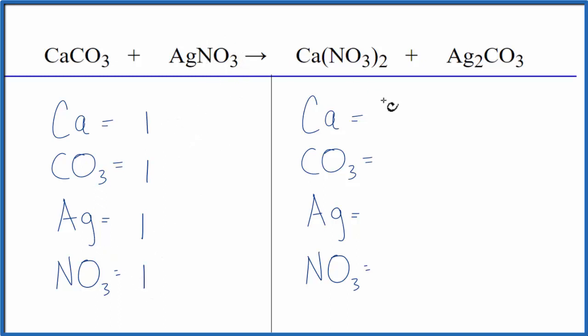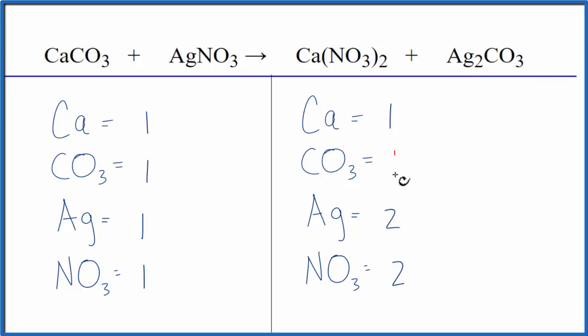On the product side, we have one Ca, and then NO3, the nitrates — we have two of those, so let's put a two there. Silvers, we have two, and then again that carbonate — we have one of those.